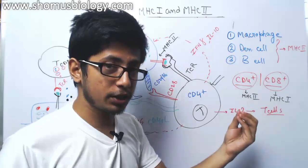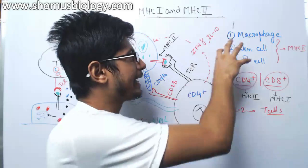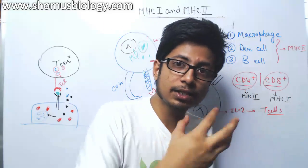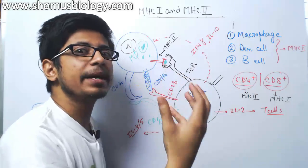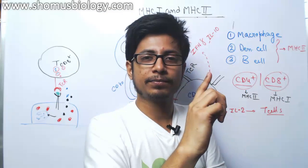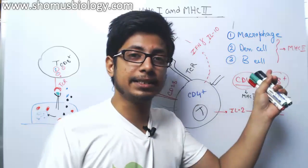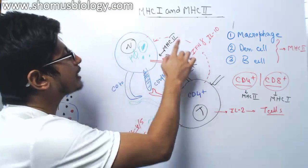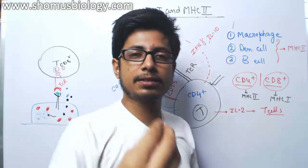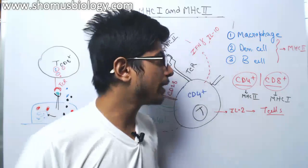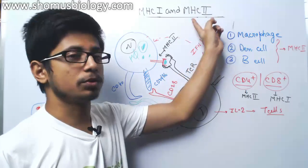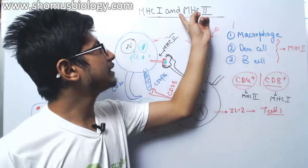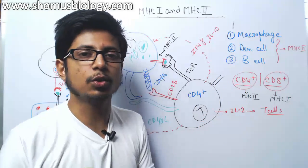Antigen presenting cells have a very special function: if there is a pathogen, they will engulf it by phagocytosis, then break it down into small fragments known as antigens, and then showcase those antigens by loading them onto a receptor to show them to the rest of the immune system cells. The receptors where they load these antigens are MHC 1 and MHC 2. While all cells have MHC 1 and can load antigen fragments onto it, only macrophages, dendritic cells, and B cells have MHC 2.